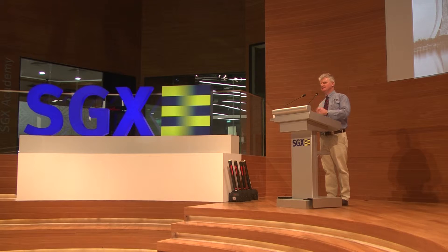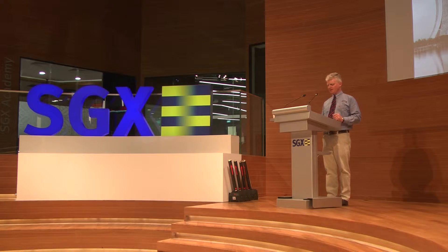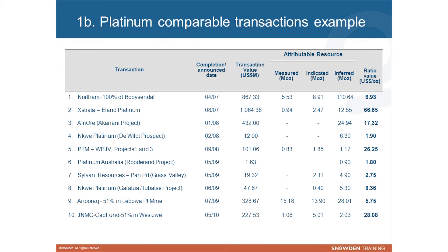Significant care must be taken to identify comparable and appropriate transactions. This example I have here is one that I brought up from a project I engaged in some years ago, looking at platinum transactions up to around about 2010. From this, the resource has been classified, values have been ascribed to the estimated ounces in the ground, and the projects valued in such a way. This can then be compared to the valuation of the project in question to derive a value for that project.